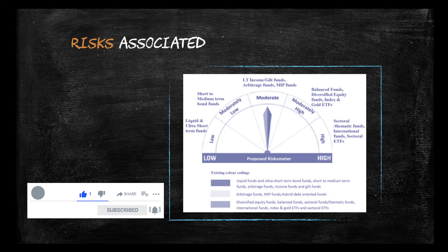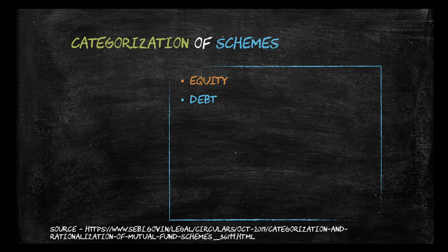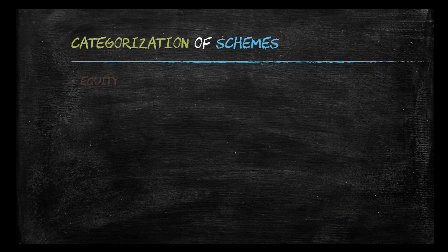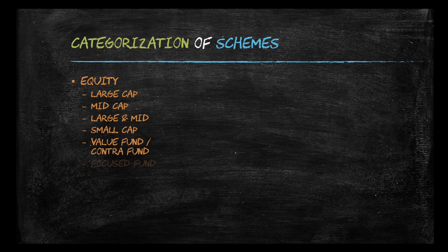Now let's look at the different categories of mutual funds. Broadly, there are five categories as per SEBI: equity, debt, hybrid, solution-oriented, and other schemes. Equity mutual funds are divided into large cap, mid cap, large and mid, small cap, and so on. Based on market capitalization, companies ranked 1st to 100th are termed large cap, 101st to 250th are mid cap, and 250th onwards are small cap.